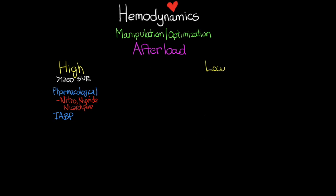For low afterload — where SVR is less than 800 — our intervention is vasopressors. These are all the ones you're familiar with in the ICU: levophed, neosynephrine, vasopressin, dopamine, epi — any medication that will increase vascular squeeze, increase SVR, and support a blood pressure and, more importantly, an optimal and sufficient mean arterial pressure.